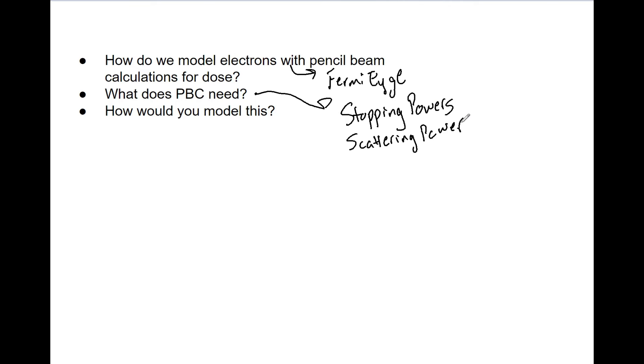And how would you model this? So you're going to use a Gaussian model. And when you look at the equation, it's got an infinity sign, and that's because it assumes an infinite slab.